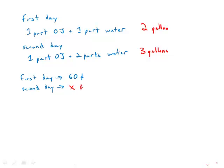And let's just assume that C is the number of cups per gallon. So on the first day, they had two C cups. On the second day, they had three C cups. On the first day, they had two C cups times 60 cents. On the second day, they had three C cups times X cents. And these two revenues were equal.